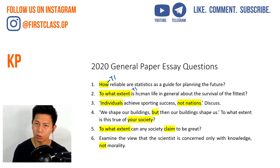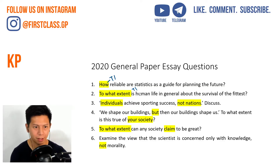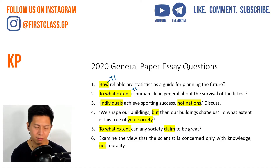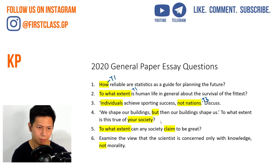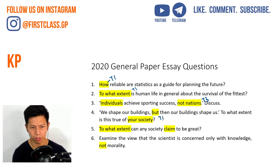I'll go into details on how to address these questions in subsequent lectures, but for now we just try to identify them. The third question — 'individuals achieve sporting success, not nations' — you are comparing individuals and nations, so it's a comparison or comparative question. That is tier 3, quite difficult. 'We shape our buildings, but then our buildings shape us.' You see the word 'but'? It is actually tier 1, double-barreled — there are two questions in one.